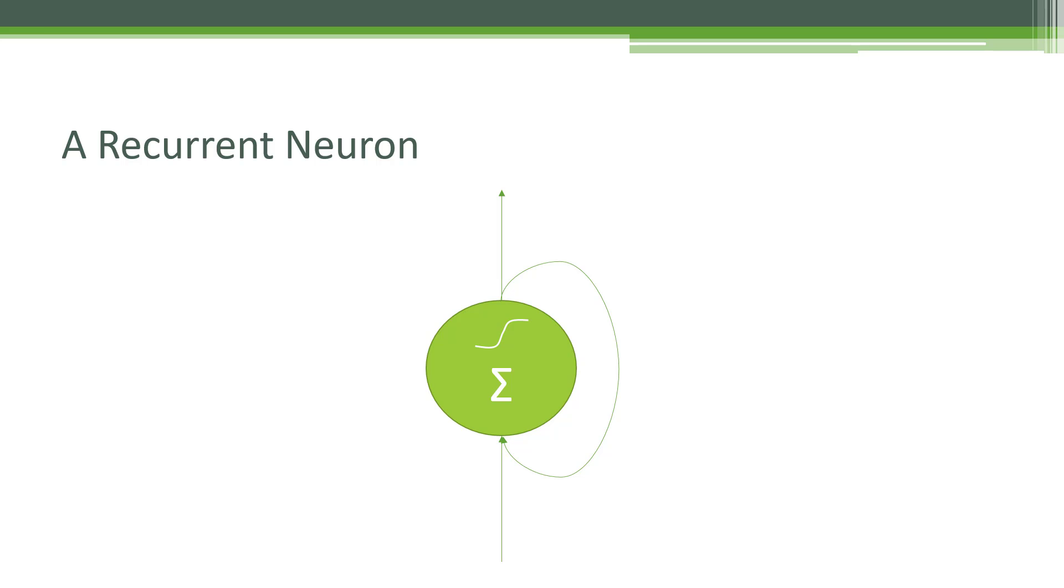Conceptually, this is what a single recurrent neuron looks like in terms of a model. So it looks a lot like an artificial neuron that we've looked at before. The big difference is this little loop here.